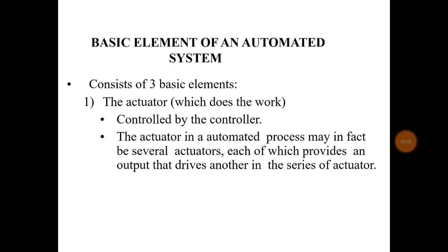Hello, welcome to my YouTube channel. In this video we will discuss the basic elements of an automated system. If you observe any automated system, you will find three basic elements: number one, actuator; number two, controller; and number three, sensor. These are the three basic elements of any automated system, and now we will discuss each one in detail.